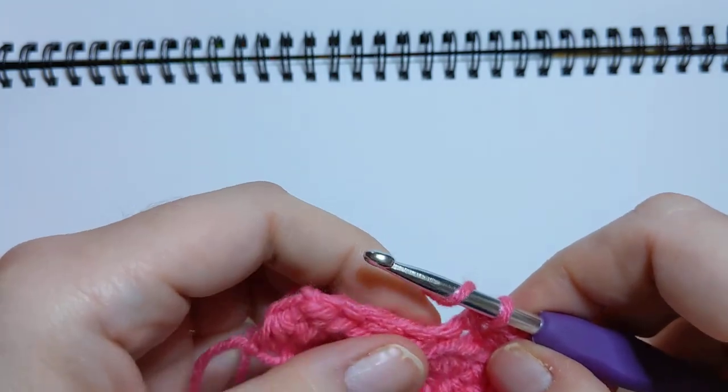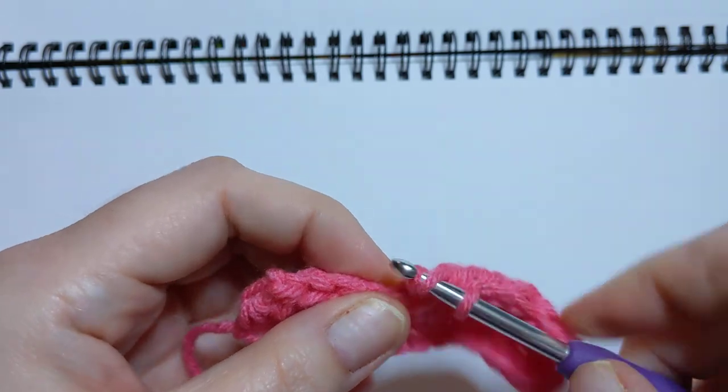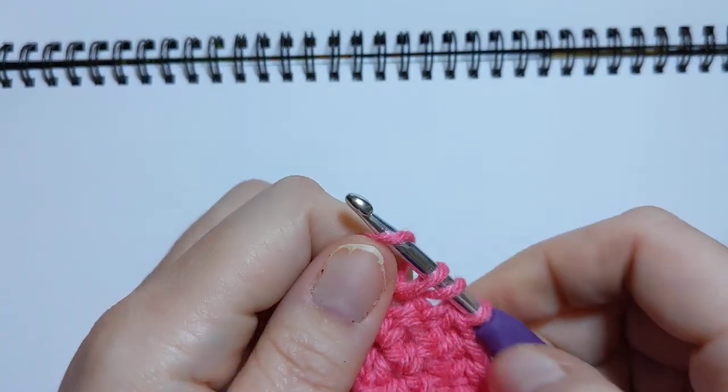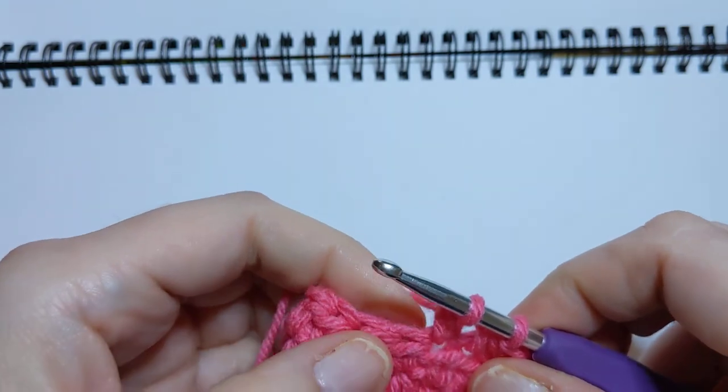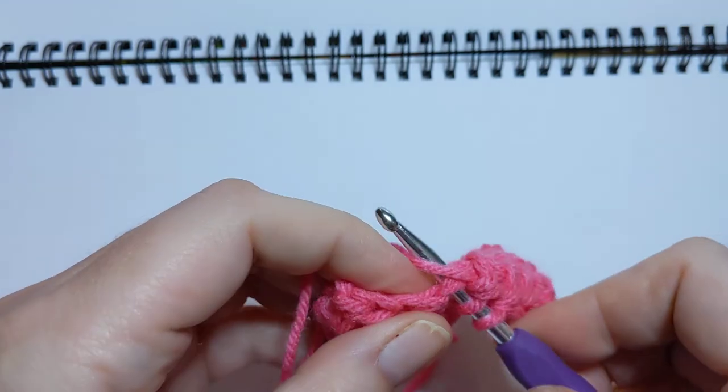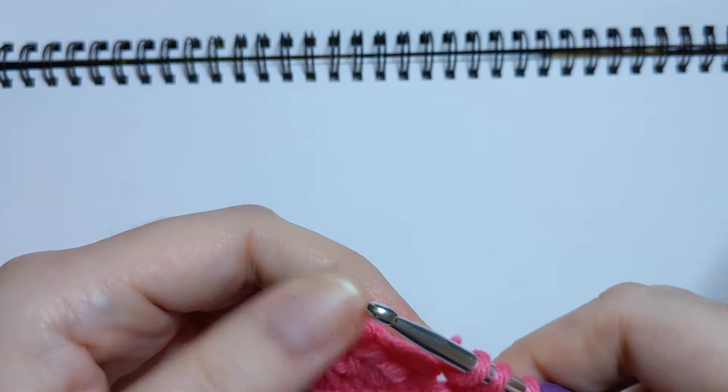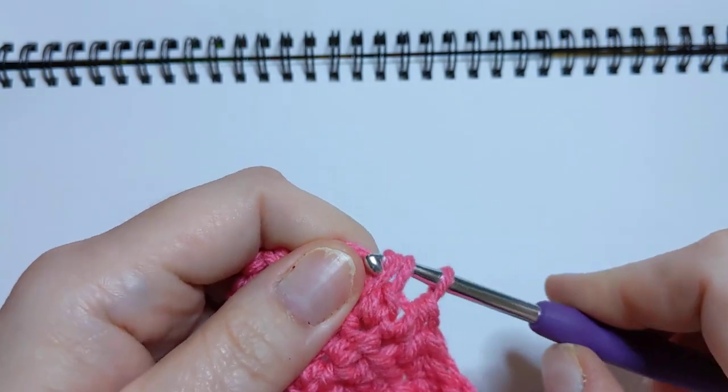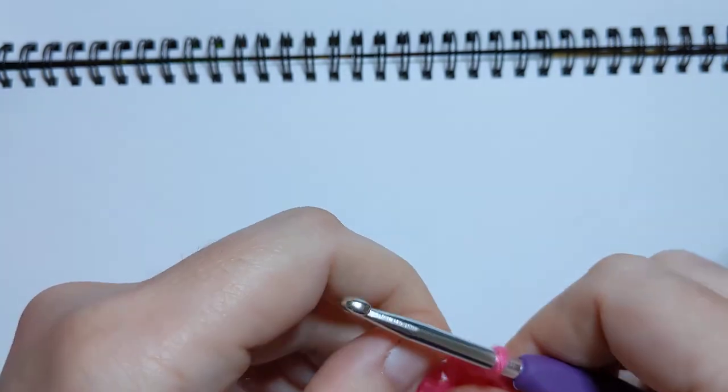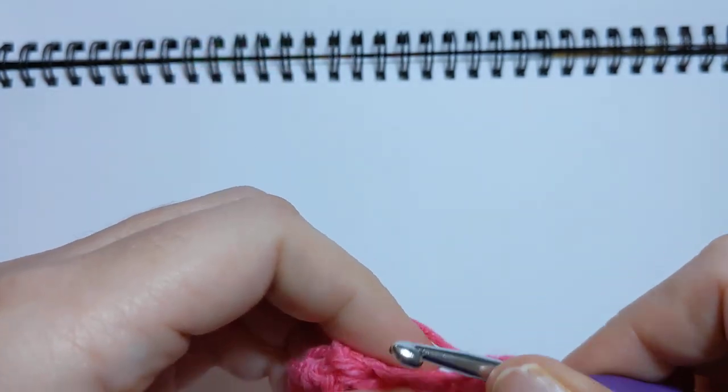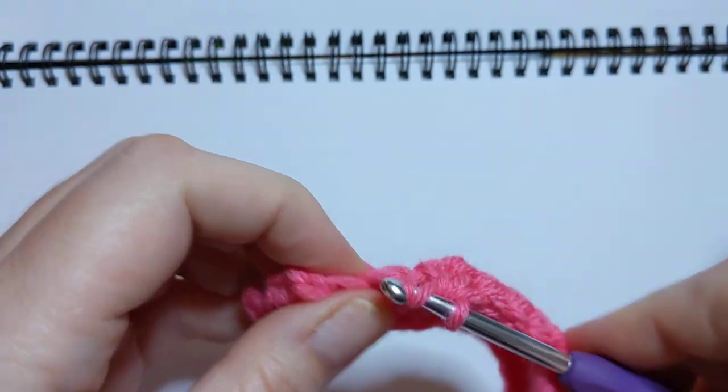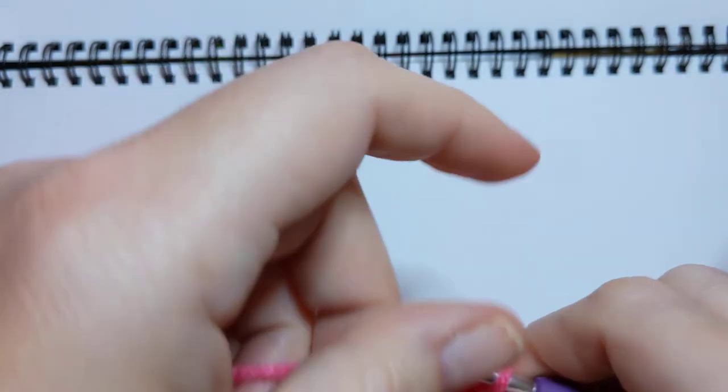Yarn over, go into the stitch, pull up a loop, yarn over, pull through the first two loops on your hook. Go into that next stitch, pull up a loop, and then finish it off like a regular half double crochet. Yeah, it's shrinking now y'all, because that's what it does when you decrease stitches.